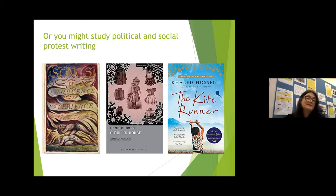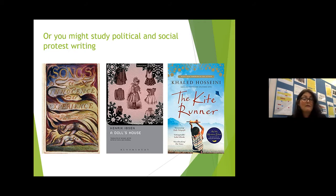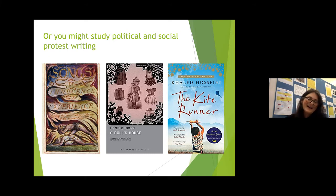The other pathway is political and social protest writing. For this option, you will look at the poetry of William Blake. You will also study a play — so instead of two novels, one of the texts is a play, which is Henrik Ibsen's A Doll's House. And you'll also look at Hosseini's The Kite Runner, which is a reasonably recent modern fiction novel.